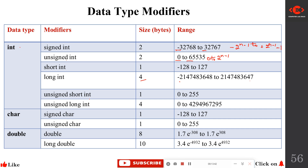Unsigned short int and unsigned long int are also available. Unsigned short int takes one byte and unsigned long int takes four bytes. For char: signed char has a range of −128 to +127, and unsigned char ranges from 0 to 255. For double, it takes eight bytes, and long double takes ten bytes with an exponential range.